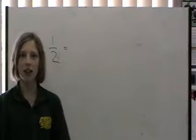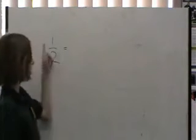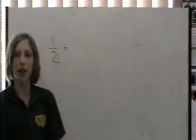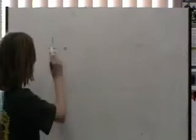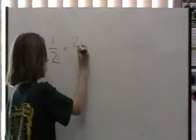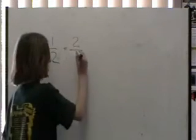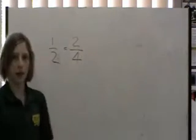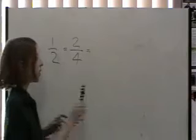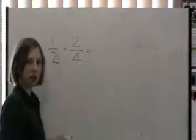To get an equivalent fraction, you have to multiply the numerator and the denominator by the same number. Let's choose 2. So 1 times 2 is 2, and 2 times 2 is 4. We have 2 quarters. 2 quarters is the same as 1 half.